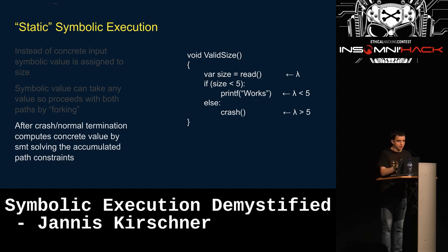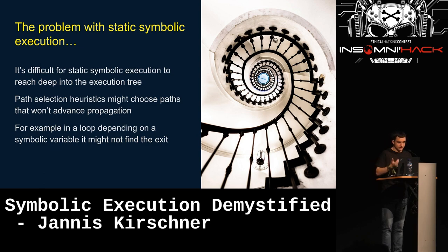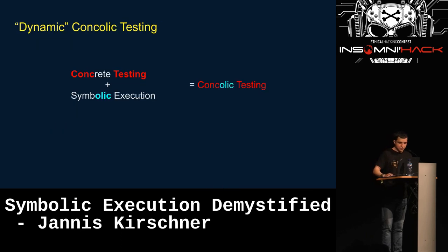If at any point your binary terminates — either via a crash or normal termination — it takes the constraints accumulated over time and solves them via an SMT solver, so you get a concrete example back. This poses some problems: for example, if you have a loop that depends on a symbolic value, it can happen that the tool never exits the loop because it's hard to reach deep into the trees. Therefore there's another technique called concolic testing, which is a mix between concrete testing and symbolic execution.